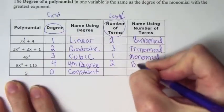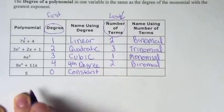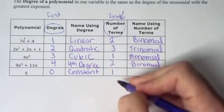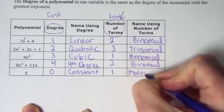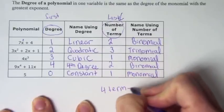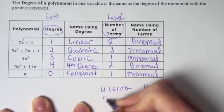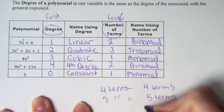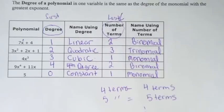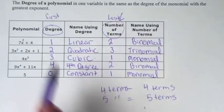The next one has two terms — we call it a binomial. This one has one term, so we call it a monomial. Just like the degrees, anything above three terms doesn't have a special name. If it had four terms, we just call it four terms; five terms, we call it five terms. So there are really only seven words you have to learn: linear, quadratic, cubic, constant, monomial, binomial, and trinomial. That's how you name a polynomial.